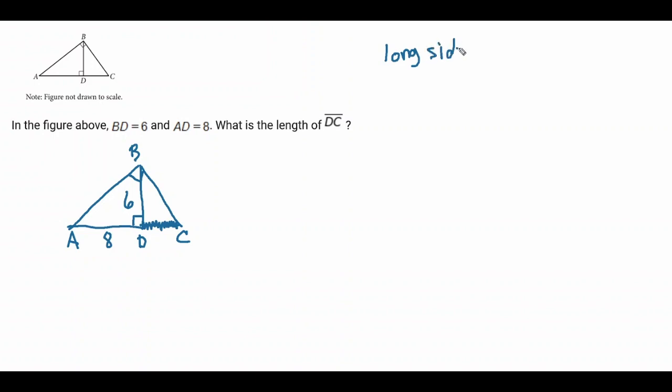The long side in the triangle on the left is related to the short side in the triangle on the left in the exact same way that the long side in the triangle on the right is related to the short side on the triangle on the right.